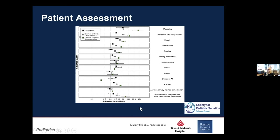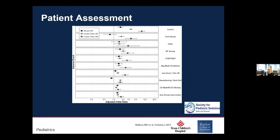With those adjusted odds ratios, be careful to really think about what that pre-sedation risk score is and whether you're appropriately screening that patient to be done in your emergency department — or if it's somebody that may require transfer to a tertiary or quaternary care center or to anesthesia. From a patient assessment standpoint, think about what kind of interventions were needed: did they need suctioning, a nasal airway, or a nasopharyngeal airway? This data is from the pediatric sedation research consortium looking longitudinally over several years of prospectively collected data.